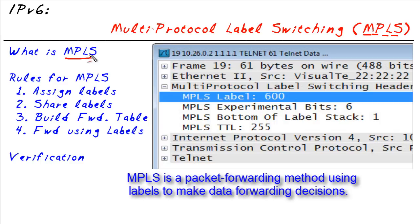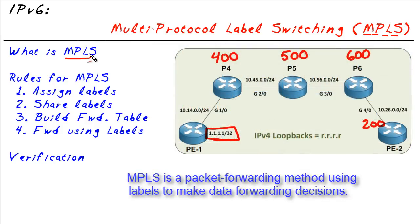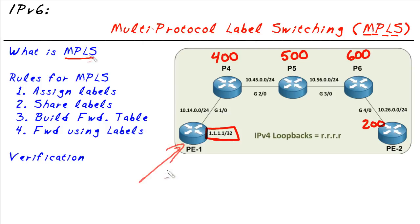However, there are some amazing additional applications that we can use because of MPLS, like Layer 3 VPNs and pseudo-wire. Let's take a look at the rules for what each router has to follow to do label switching instead of IP forwarding on a packet-by-packet basis.